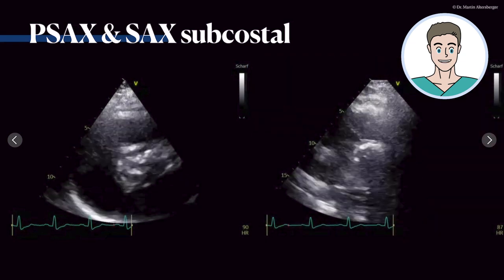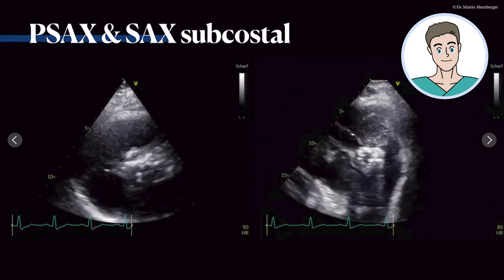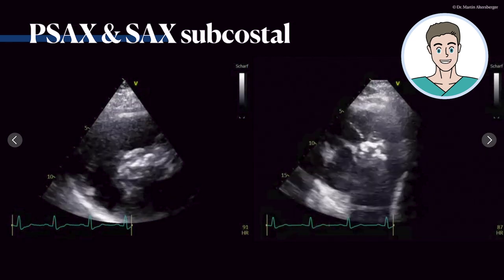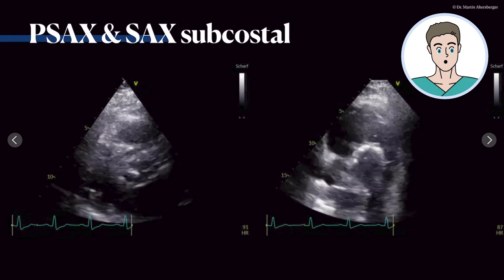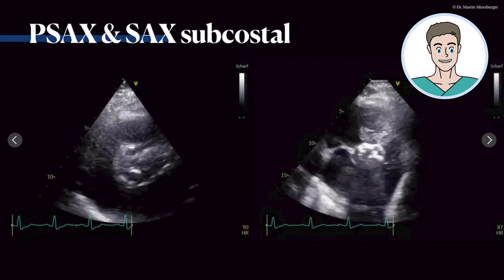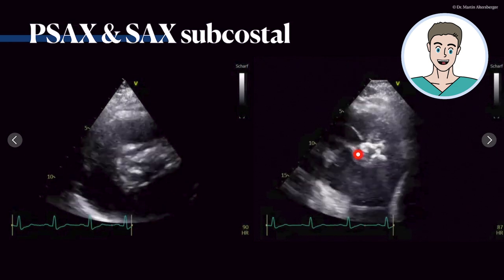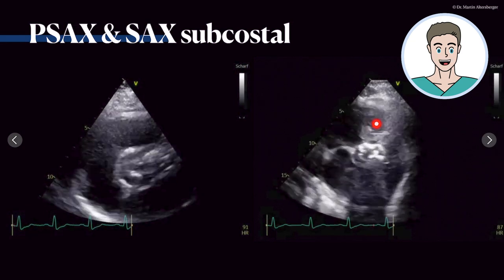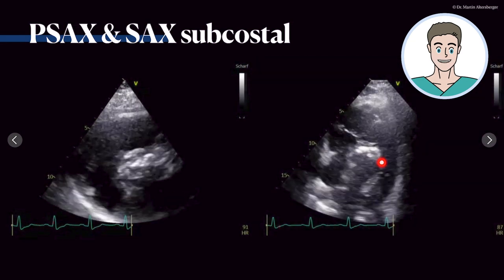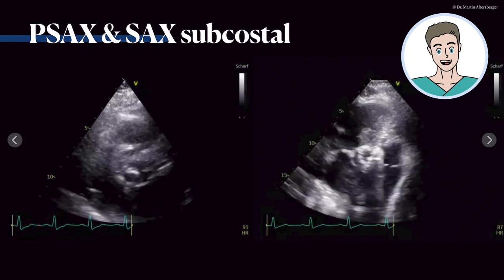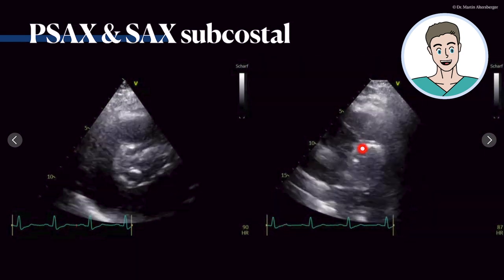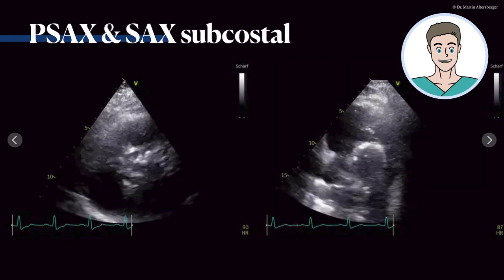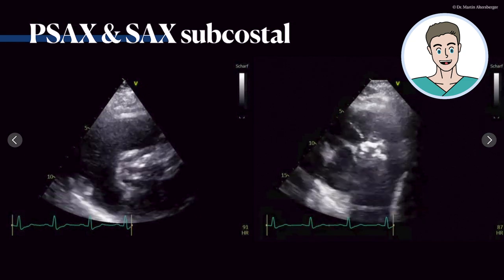This is a subcostal short axis. How do you achieve that view? When you have a four-chamber view where the marker points to the left side of the patient in the subcostal approach, you simply rotate the transducer and tilt it upwards, like you would in a parasternal approach to see the same structure. Here is the aortic valve, here is the interatrial septum, tricuspid valve, right ventricle RVOT. Here you can nicely see that the valve is severely calcified — even the calcifications block the field of view in the far field. This is truly a severely calcified aortic valve.